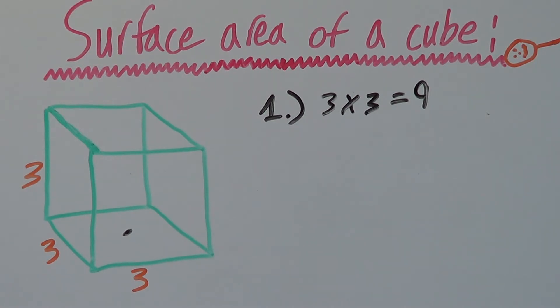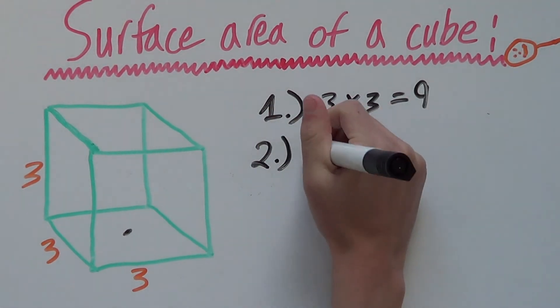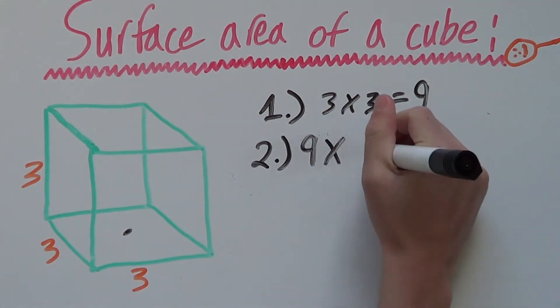Step one is now complete. Step two is to take the answer from our first step, which is nine, and times that by six.